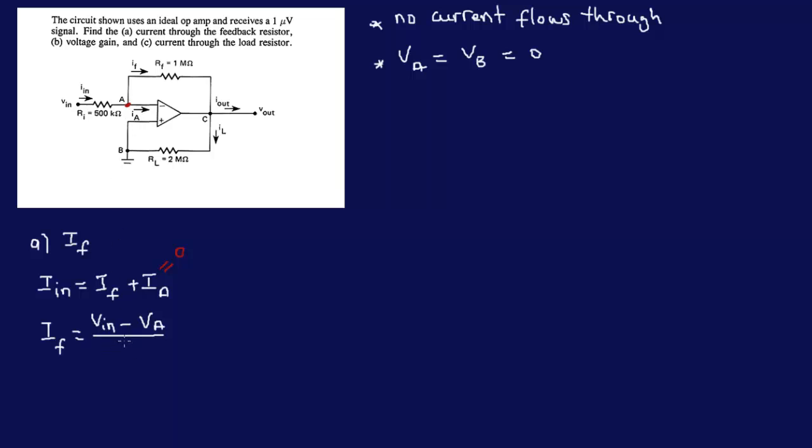Okay, back to the problem. So over RI, right, over RI. So VA is equal to zero. VIN was given as 1 times 10 to the power minus 6 over RI, which was 500 times 10 to the power 3. And this is 2 times 10 to the power minus 12. So there it is, our first answer.